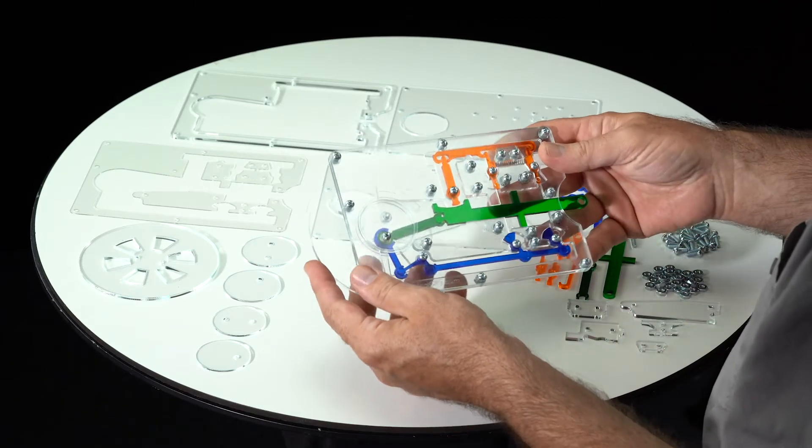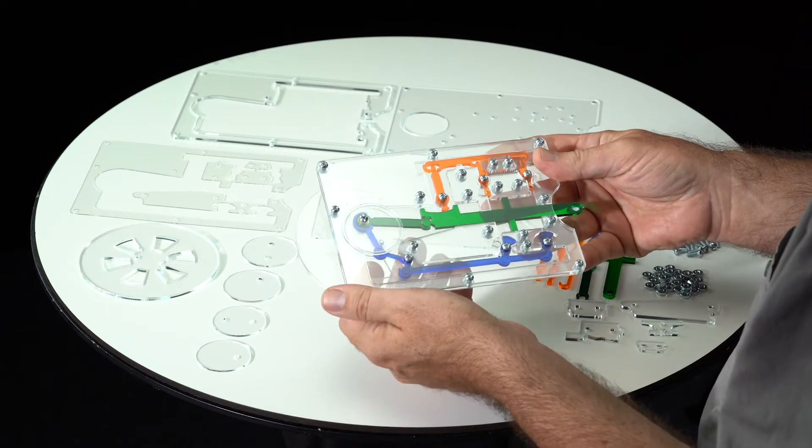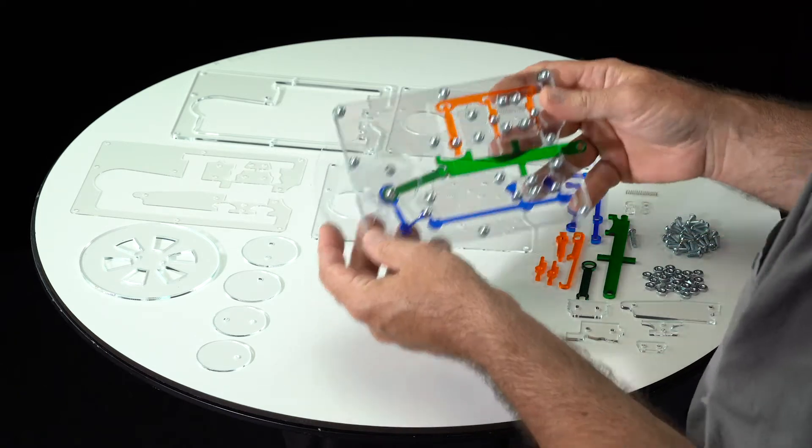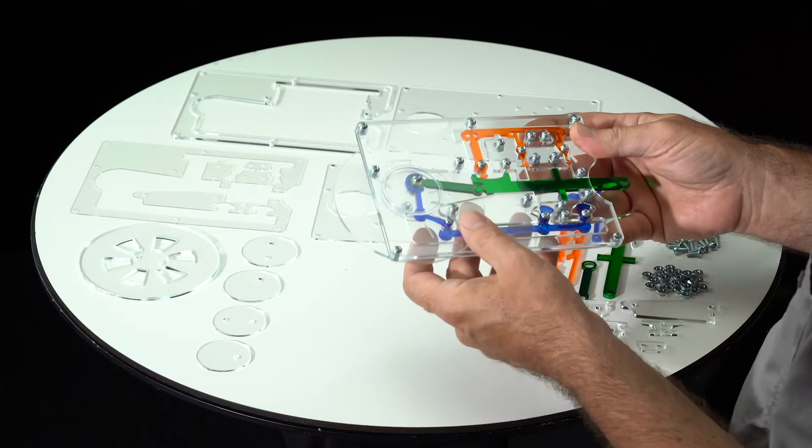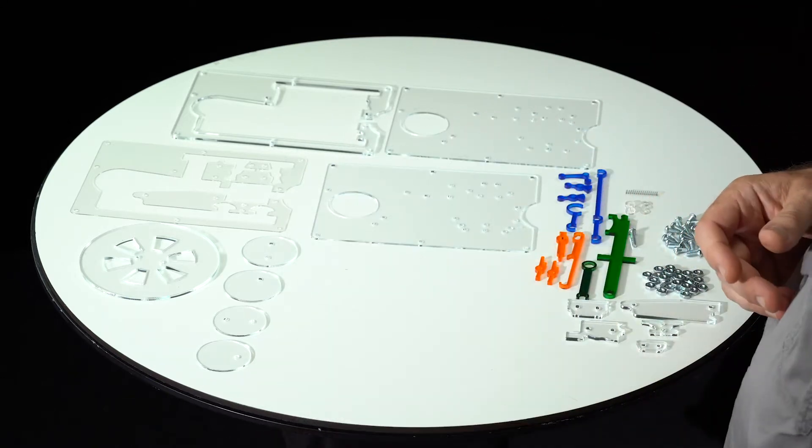Today we're going to build this lovely translucent and transparent acrylic model of a Corliss-type steam engine. And when we finish building it, I'll show you how it works and explain what's quite interesting about this type of steam engine.